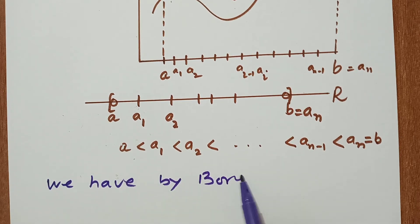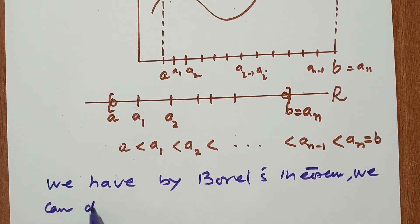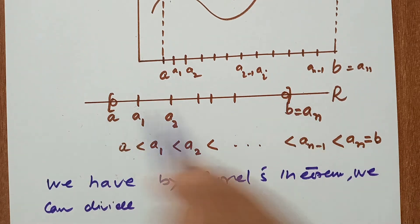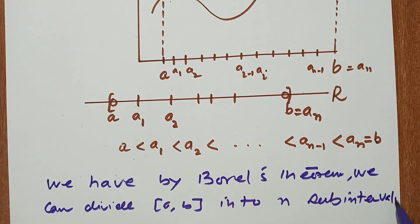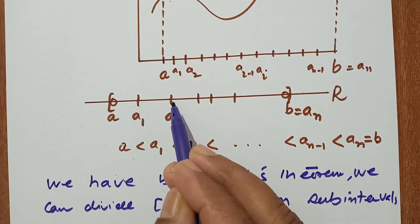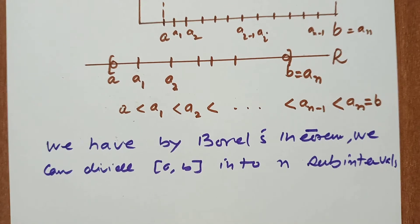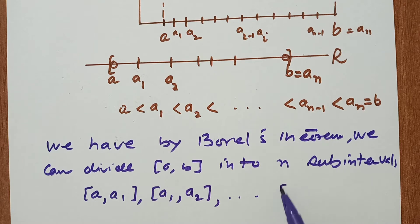By Borel's theorem, we can divide this closed interval [a,b] into n sub-intervals: [a, a₁], [a₁, a₂], [a₂, a₃], and so on up to [aₙ₋₁, aₙ], where aₙ is nothing but b.